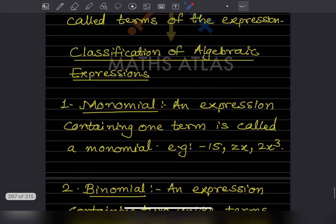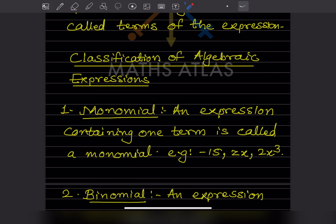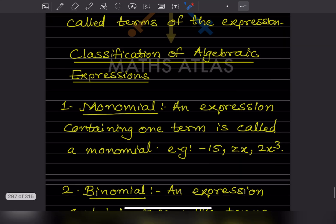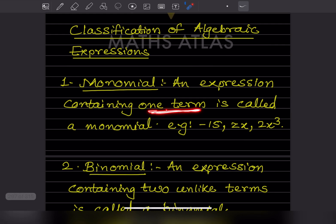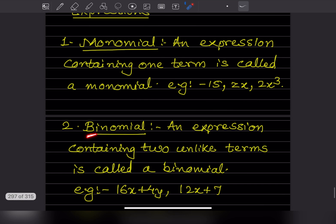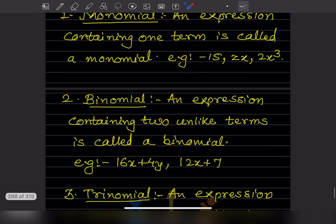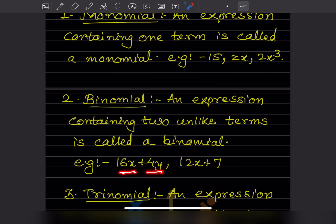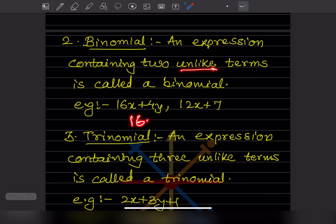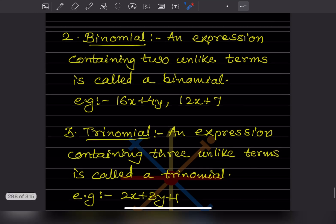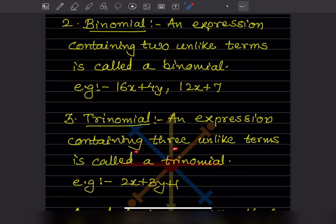Now let us see the classification of algebraic expressions. 'Mono' means one, so an expression containing only one term is called a monomial. 'Bi' means two — an expression containing two unlike terms is called a binomial. For example, an expression with x and y as two unlike terms is a binomial. If both terms are x, it is not a binomial even if there are two terms.